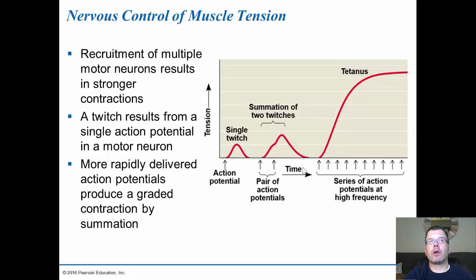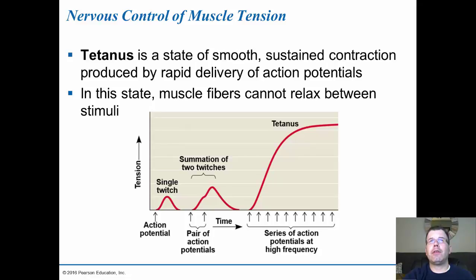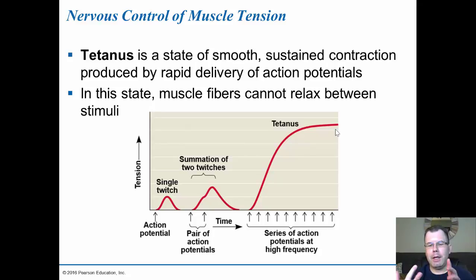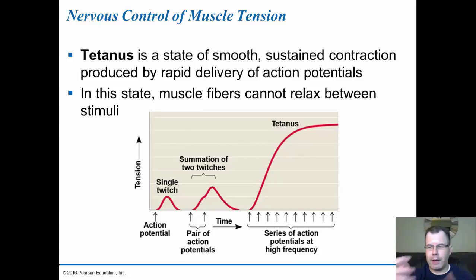Recruitment of multiple neurons results in stronger contractions. A single action potential produces a twitch, but more rapidly delivered action potentials produce a graded response, leading to tetanus. Tetanus is a state of smooth, sustained contraction from rapid delivery of action potentials where the muscle fibers can't relax between stimuli — this is when we exert our muscles. Eventually muscles get tired because they use up ATP and deplete calcium stored in the sarcoplasmic reticulum, causing muscle fatigue and weakness over time.